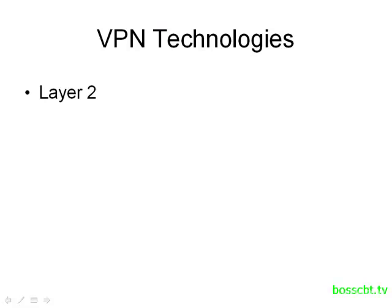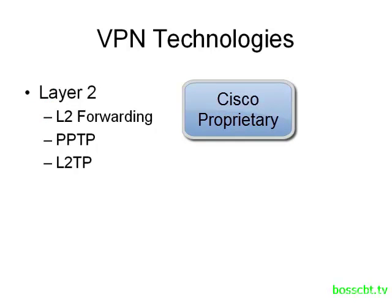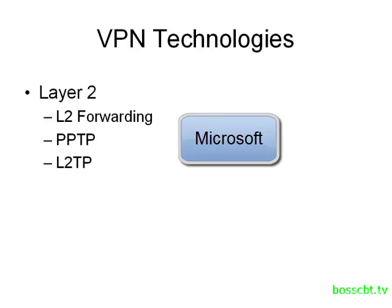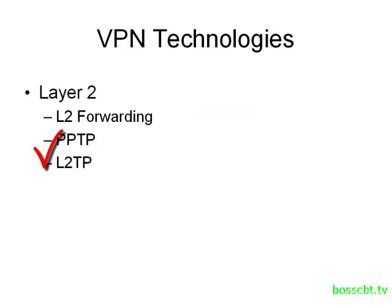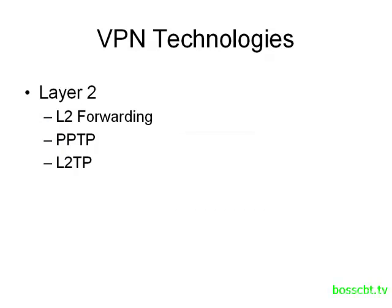Let's briefly touch on the different types of VPN technologies. At layer two of the OSI model, we have the Layer Two Forwarding protocol — a Cisco proprietary protocol designed for dial-up that created a secure connection, but is now obsolete. After that came Point-to-Point Tunneling Protocol, created by Microsoft, which did similar things with some different features. Finally, we have the Layer Two Tunneling Protocol, where Cisco and Microsoft came together and combined L2F with PPTP to produce L2TP, which replaced the earlier two. That's the progression of VPN technologies at layer two.